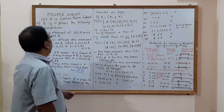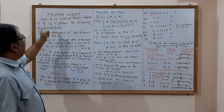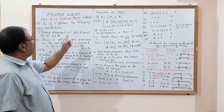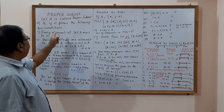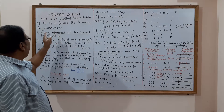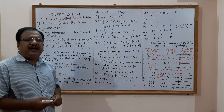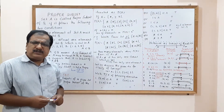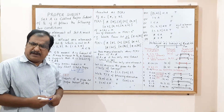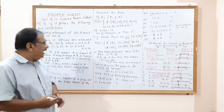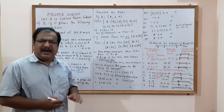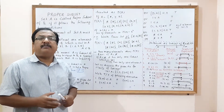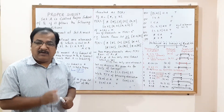As the name says, what is a proper subset? A set A is called a proper subset of B if it follows two conditions. First, every element of set A must be in set B. And secondly, there is at least one element in B which is not in A.